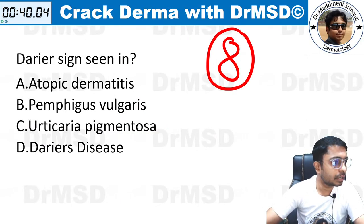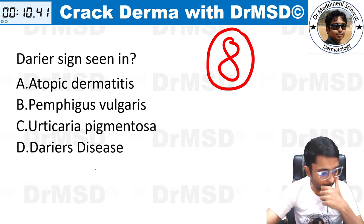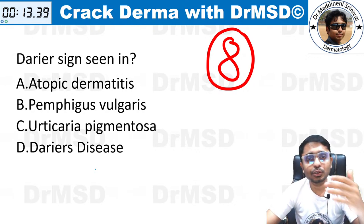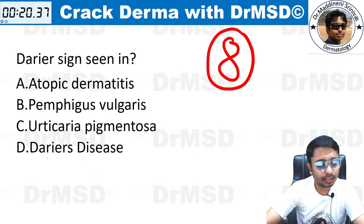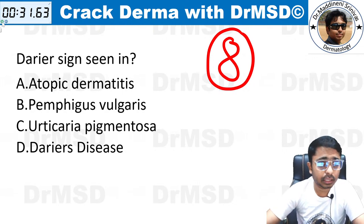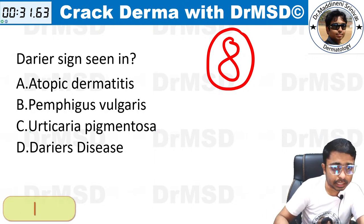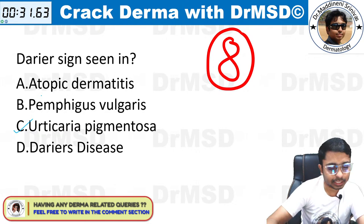Question number eight — Darier sign is seen in what? Well done, Rajay and Lavanya — you have marked it as option A. These kinds of questions in the final exam can be confusers; you might answer that it is Darier's disease, which is probably the most common wrong answer. But if you have marked it as option C — urticaria pigmentosa — then you are absolutely right.